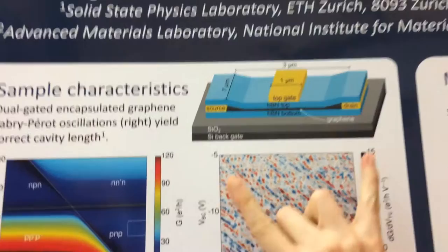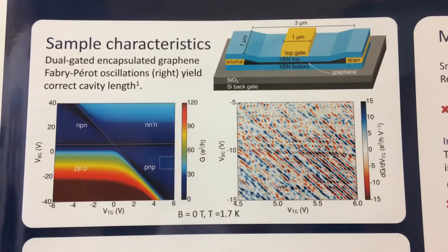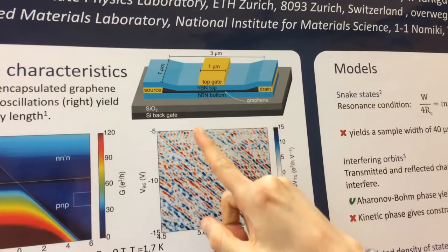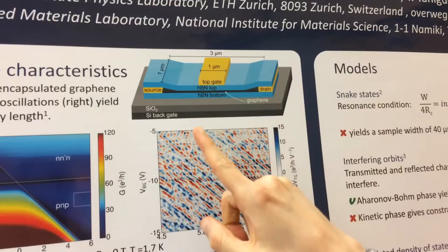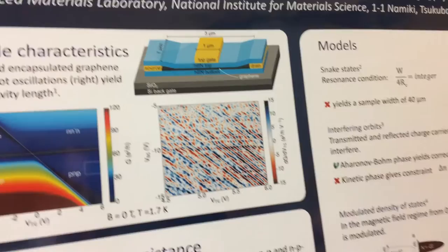We have a graphene flake over here with a gate underneath the entire sample with which we can change the electron density in the sample. We have a top gate which is only sitting on the middle region, so there we can tune the electron density or the hole density in the middle region.